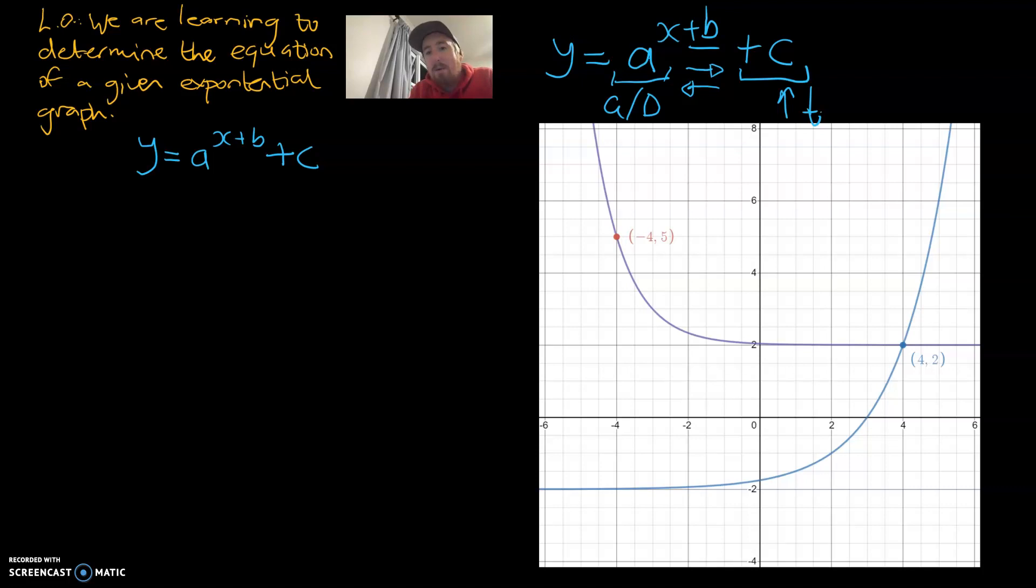So the first step I'm always looking for is the asymptote of our graph. And it looks like the asymptote is there at minus 2 for that blue graph. And what that means, y equals minus 2. And that means c is going to be equal to negative 2. So that c value there, we're going to change to negative 2.